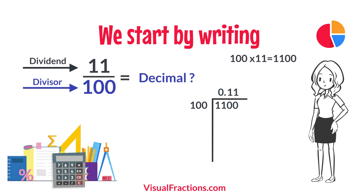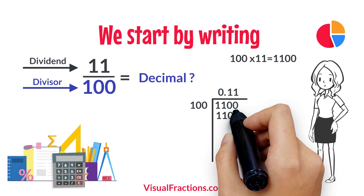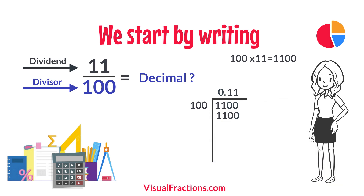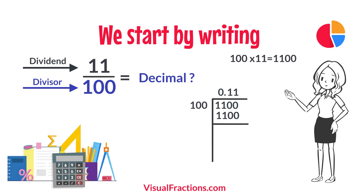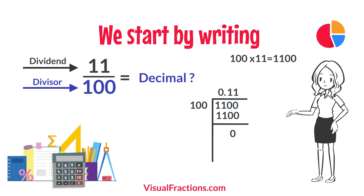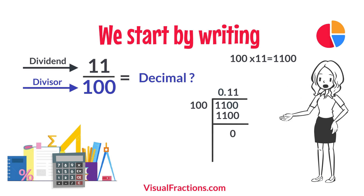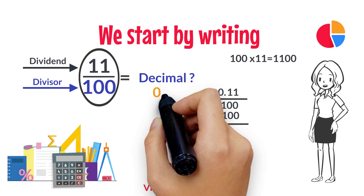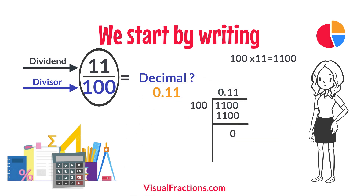Multiplying 11 by 100 gives us 1100. When we subtract 1100 from 1100, we get a remainder of 0. So there we have it — the fraction 11 one hundredths converted to a decimal is 0.11.